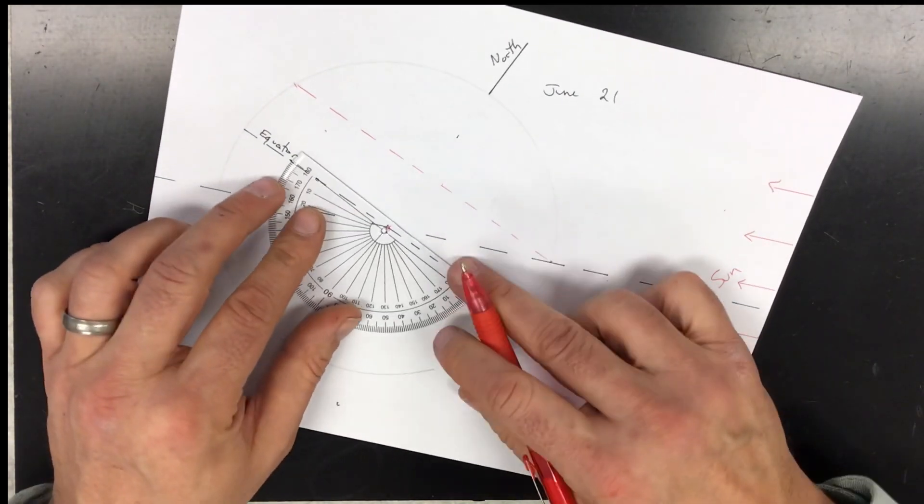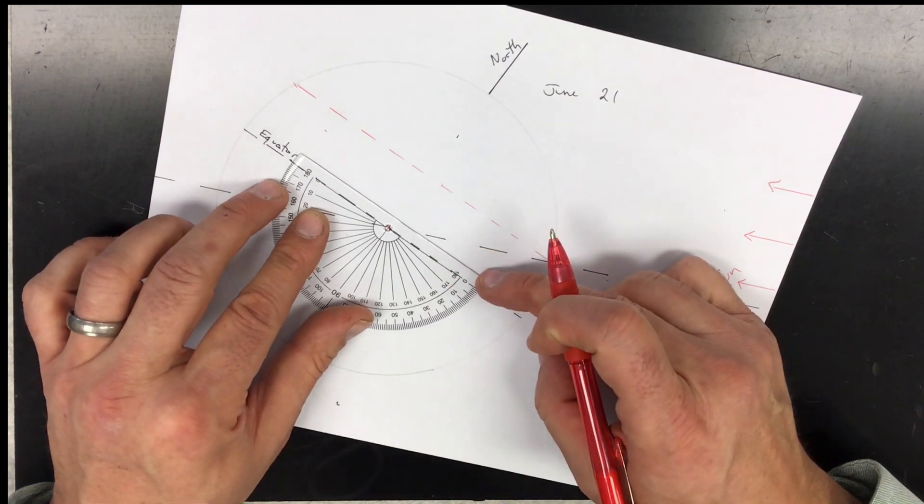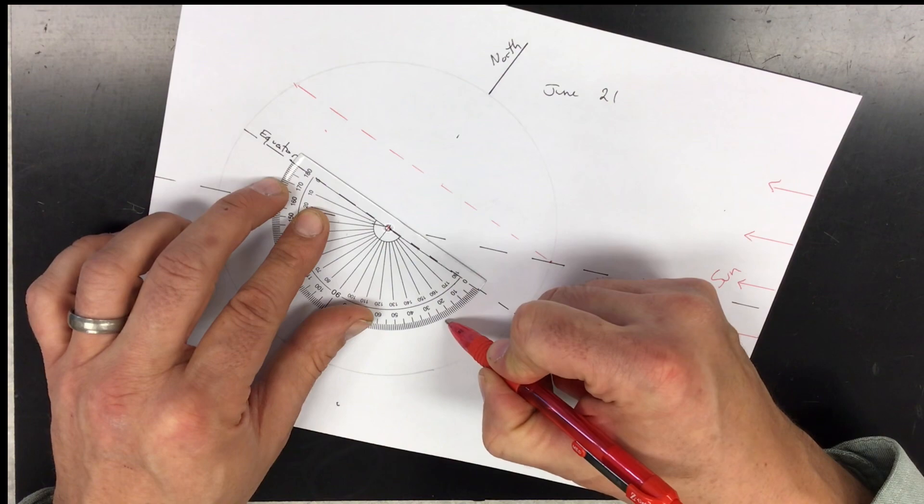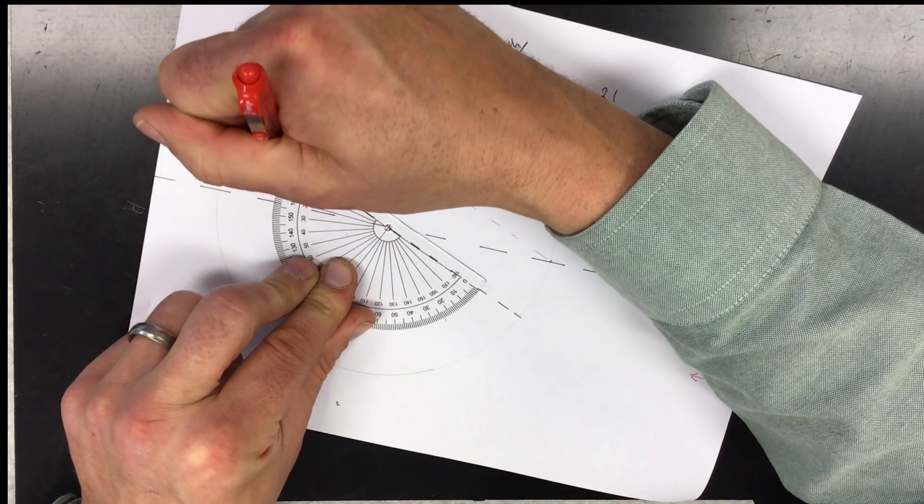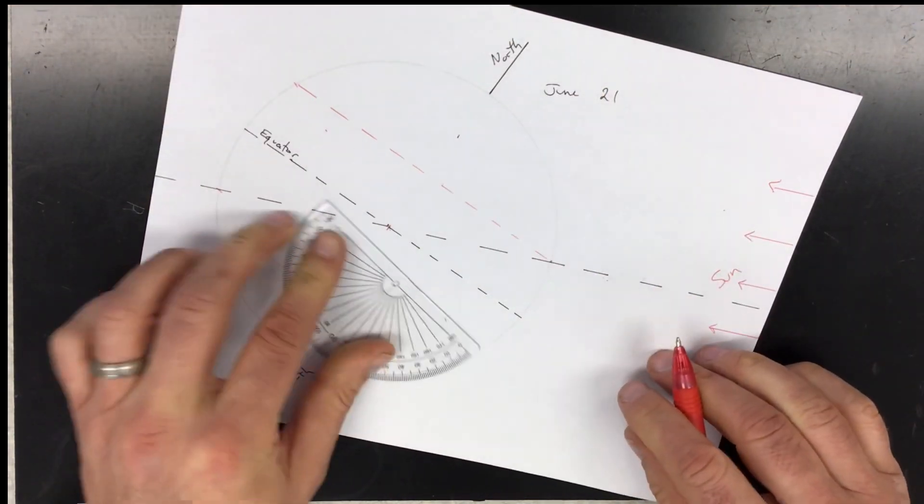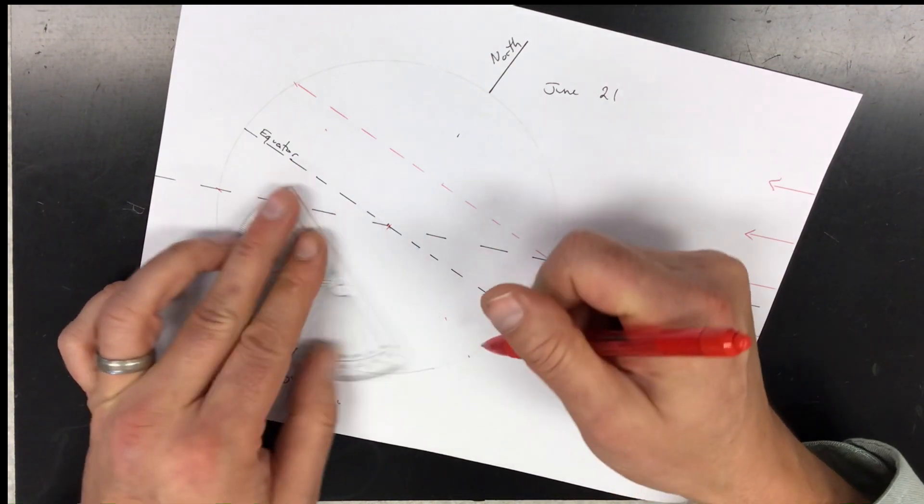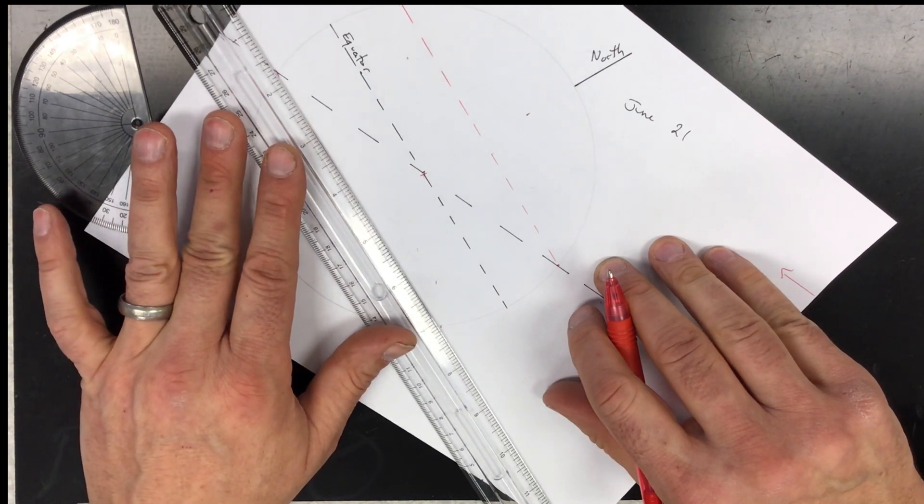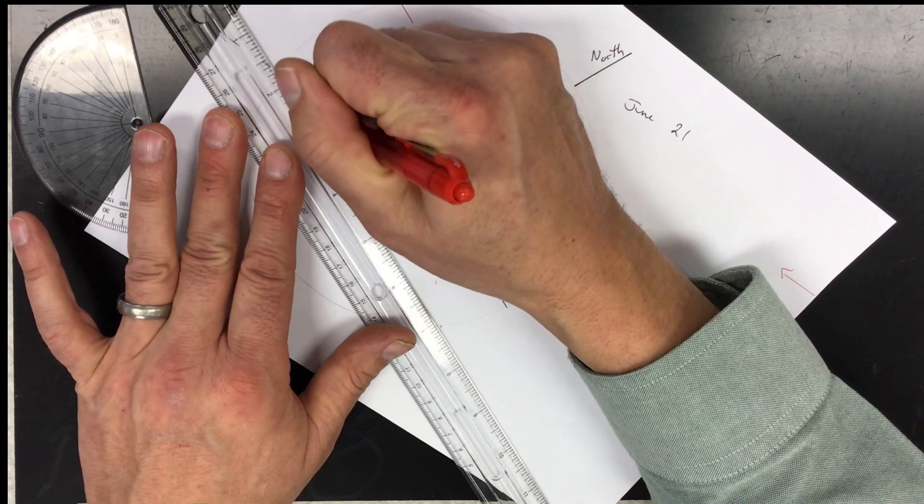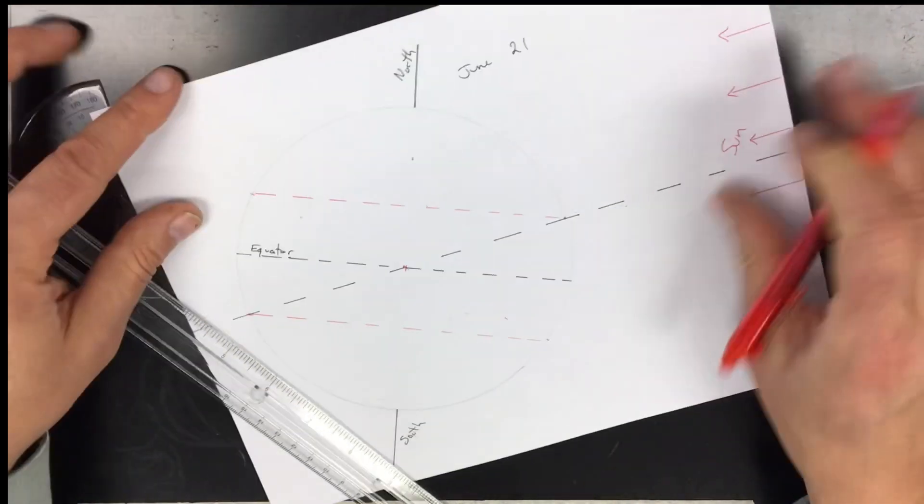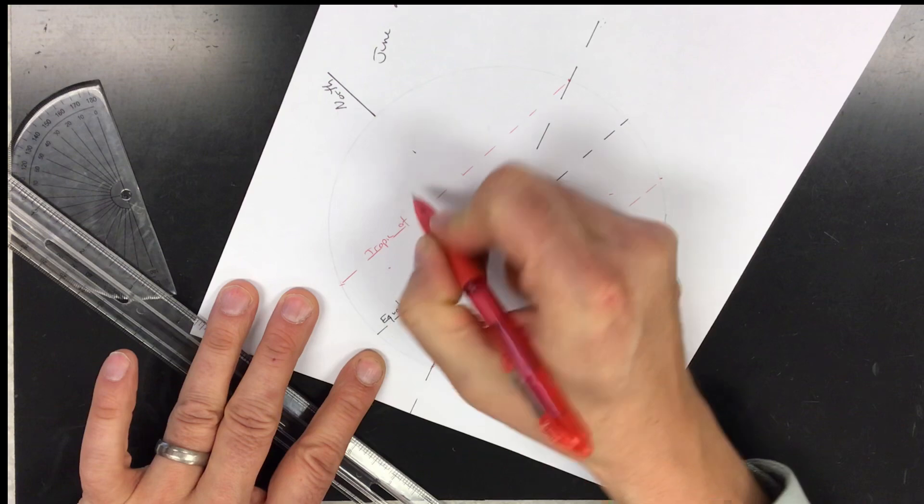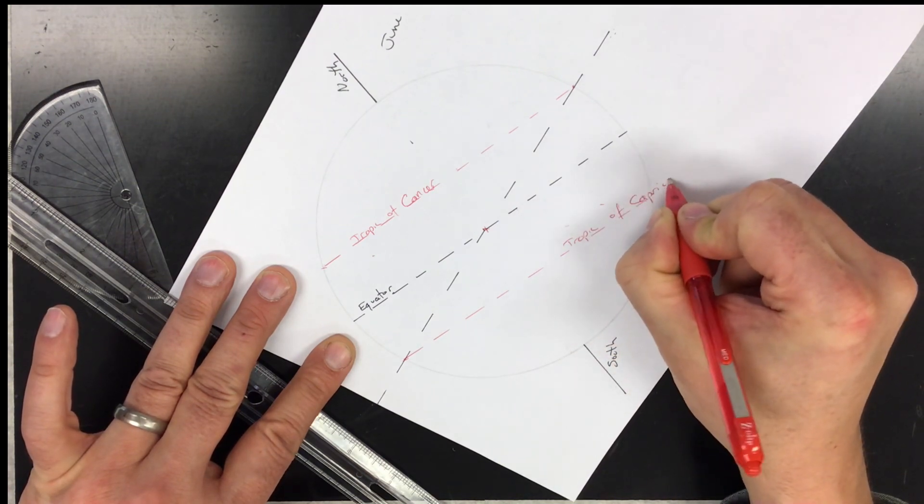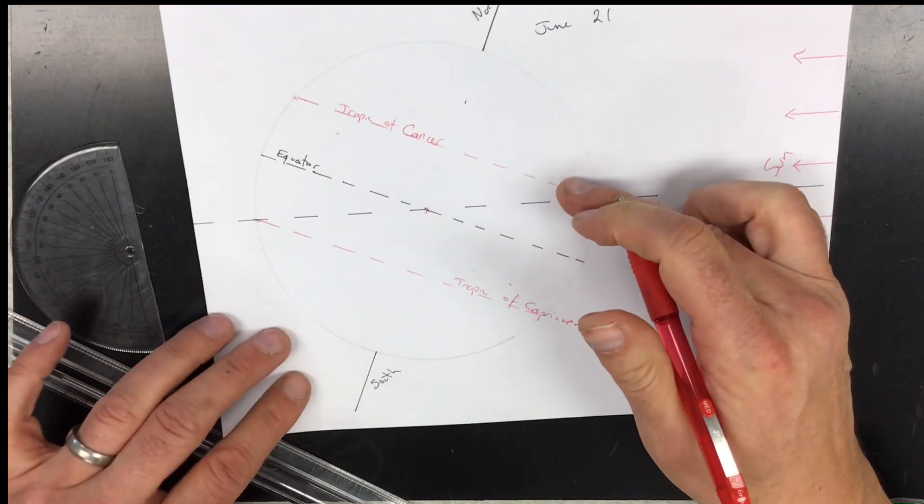Then the tropic of Capricorn, which on June 21st the sun is at the lowest point because it's in the southern hemisphere. 10, 20, 23 and a half right here. Extend this from the center out to the edge, mark, draw across. These lines should be all parallel to each other. This is the tropic of Capricorn.